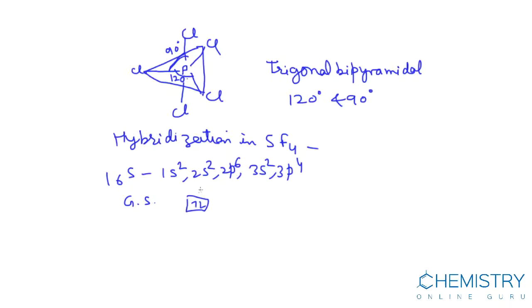Central atom is sulfur and 3d is empty. In excited state, one electron from 3p—this is 3p, this is 3d—one electron from 3p jumps to 3d.